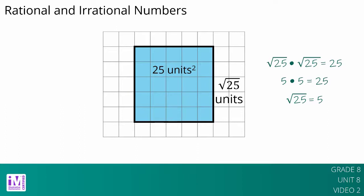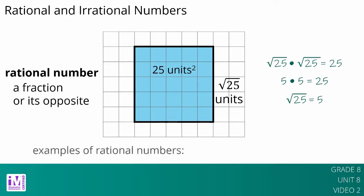The square root of 25 is an example of a rational number. A rational number is a fraction or its opposite. We can always write a fraction in the form a over b, where a and b are whole numbers and b is not 0. But there are other ways to write them. For example, we can write the square root of 25 equals 5 over 1. So the square root of 25 is a rational number.